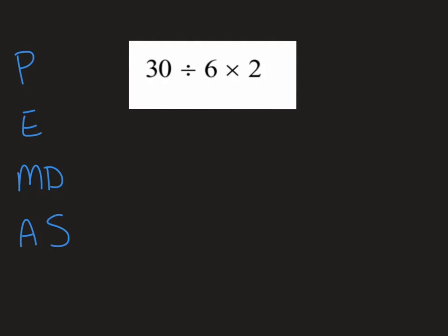For this particular problem you only see two things: I see a divide sign and I see a times sign. So if we look at our checklist here, there's no parentheses, there's no exponents.